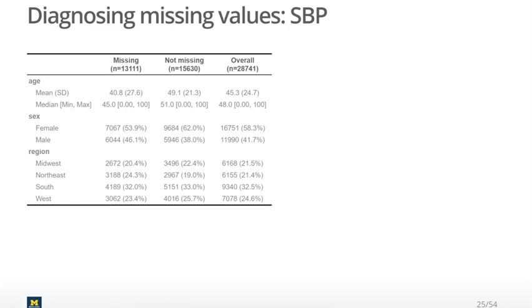The sex breakdown is a little different — there are more males when the data is missing compared to when it's not missing. The percentage of males went from 38% up to 46% when the data were missing. You can compare the regions and see some slight differences; the Northeast has a higher percentage where the data is missing. That could be explained by things like the blood pressure cuff being broken in that region. Note that we're only looking at missingness here for one variable: systolic blood pressure.